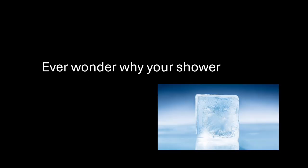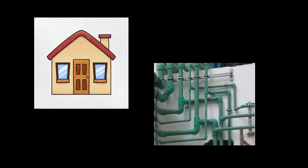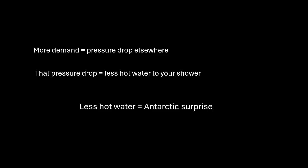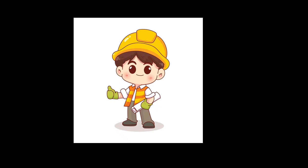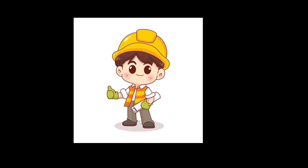Ever wonder why your shower suddenly freezes when someone flushes the toilet? Blame fluid dynamics. In your house, water moves through pipes like highways. When someone opens a valve like a toilet, the flow changes. And more demand equals pressure drop elsewhere. That pressure drop equals less hot water to your shower. Less hot shower equals antarctic surprise. And engineers have to design pipe diameters using continuity equations and pressure head and Bernoulli friction losses using TEL and HGL. And how planes fly? The wing, Bernoulli and lift. Air goes faster over the curved top as we said before with the wing. Pressure drops and net upward force equal to the lift.